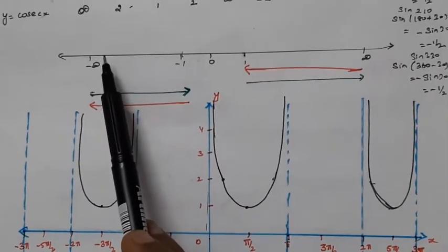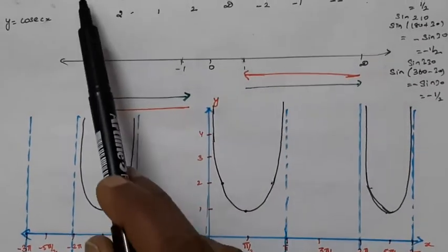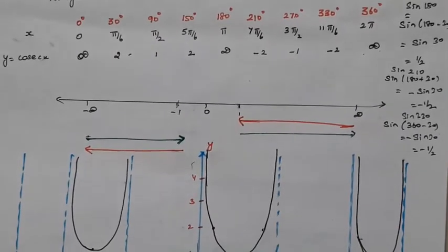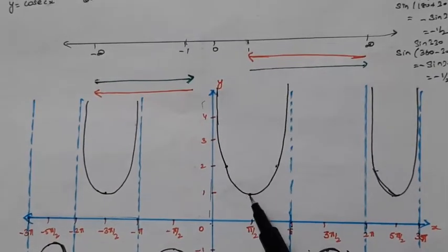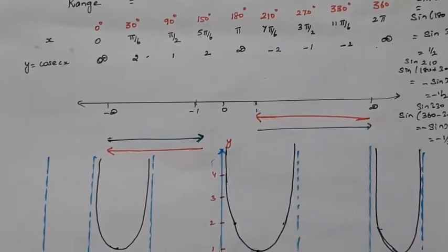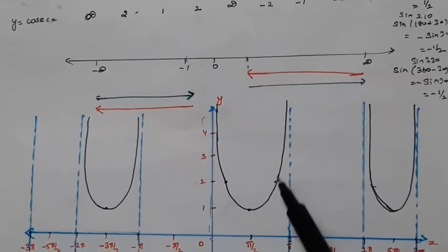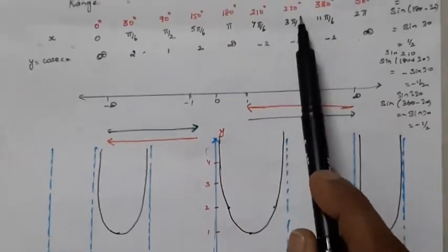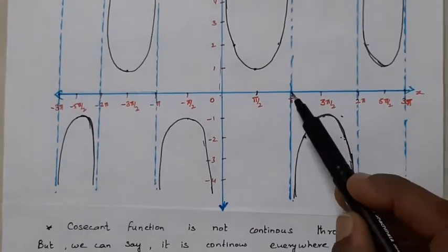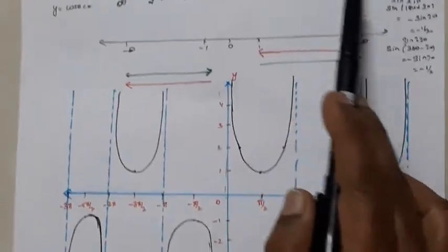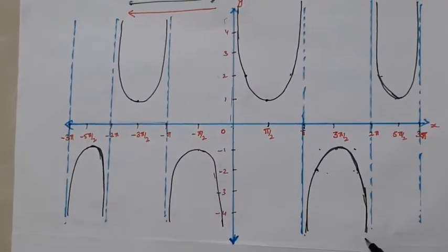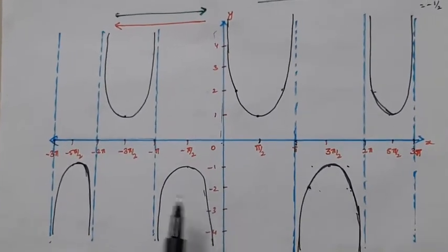Looking at the curve behavior: from 0 to π/2 the curve decreases from infinity to 1, and from π/2 to π it increases from 1 back to infinity. From π to 3π/2 it increases from −infinity to −1, and from 3π/2 to 2π it decreases from −1 to −infinity. This is the complete graph of the cosecant function.